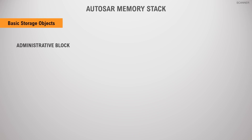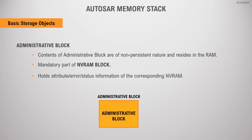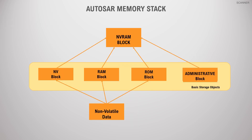An administrative block is a special type of block which resides in RAM. The contents of administrative blocks are non-persistent in nature. These blocks are a mandatory part of the NV-RAM block and are mainly used to hold the attributes, error information, and the status of the NV-RAM blocks. These are the different types of basic storage objects through which the NV-RAM Manager handles the different types of non-volatile vehicle data.